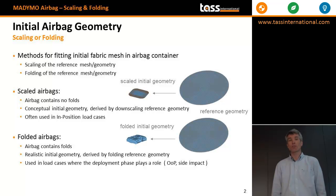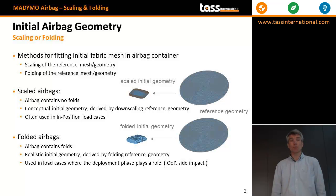One of the major things you have to take into account is that you don't use projection methods. Because if you use projection methods, elements in the initial state can get a zero length, and that might give instability. For that reason, it's preferred to use something like scaling — in this case, scaling in four directions.